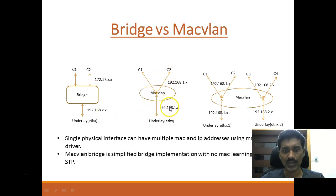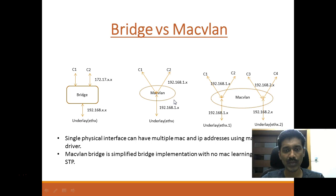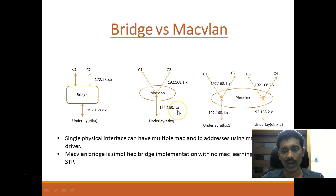In this picture, we illustrate how a MacVLAN network driver would look like. With MacVLAN, there are different kinds of MacVLAN drivers. In the case of Docker, we use a MacVLAN bridge implementation, which is a very simplified bridge implementation with no MAC learning, NAT, or STP. With the MacVLAN driver, we can have the containers in the same physical subnet as the underlay network — here the 192.168.1 network. With MacVLAN, a single physical interface can have multiple MAC and IP addresses.